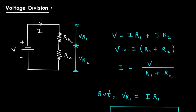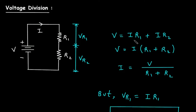The voltage across R1 and R2 will be the summation of Vr1 and Vr2. So V is equal to Vr1 plus Vr2. But Vr1 is equal to I into R1 and Vr2 is equal to I into R2. So here we can see V is equal to I into R1 plus I into R2.